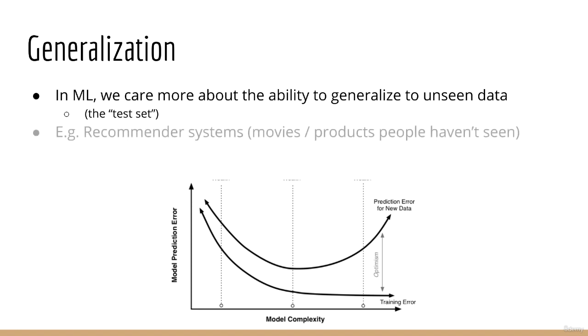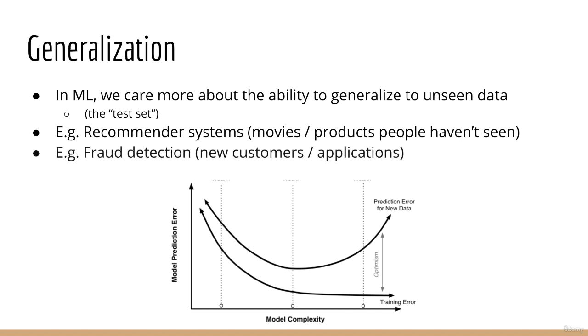For example, if you're building a recommender system, those recommendations will be going to people who have not yet seen the movies or purchased the products that you are going to recommend. If you're building a fraud detection system, you want to detect future fraud, not past fraud, which you already know is fraud.